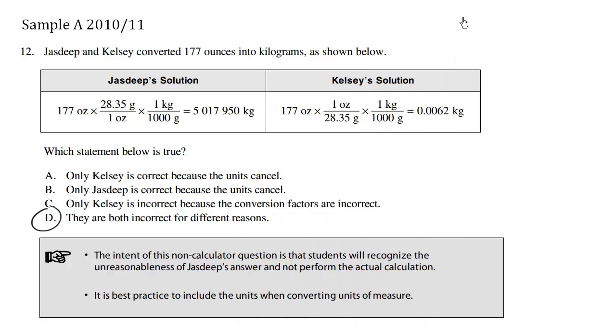Now let's take a look at the second solution, Kelsey's solution. We have the original amount, 177. And we're multiplying again by this correct ratio, another correct ratio. However,